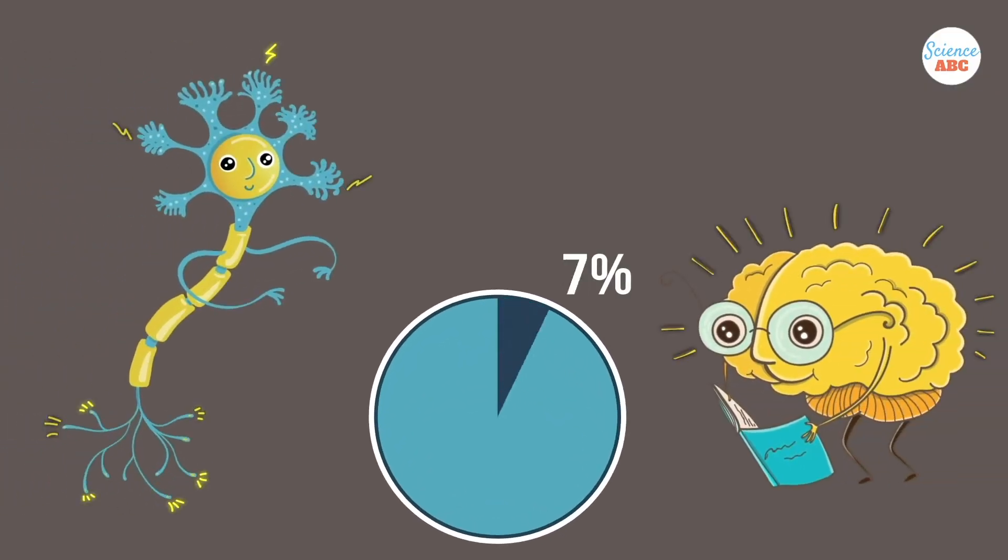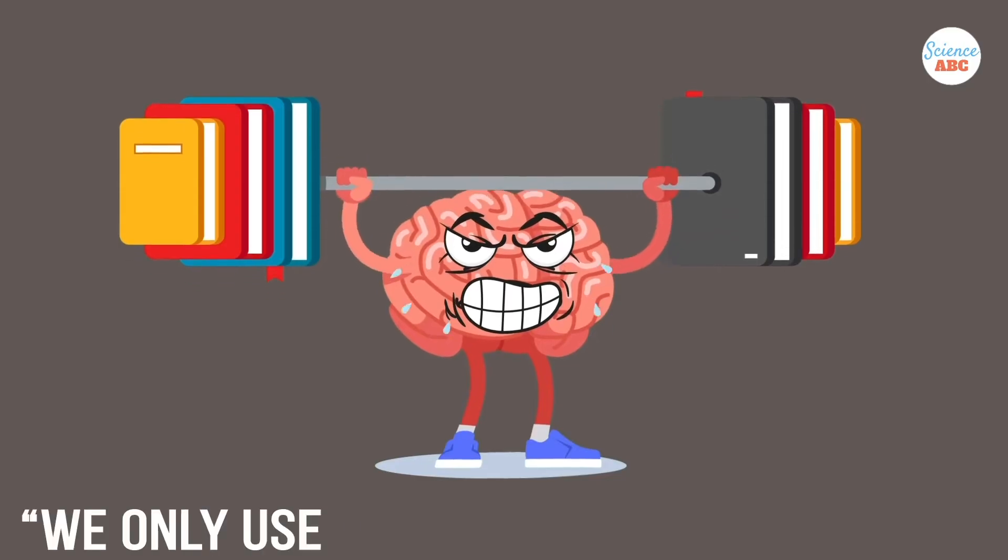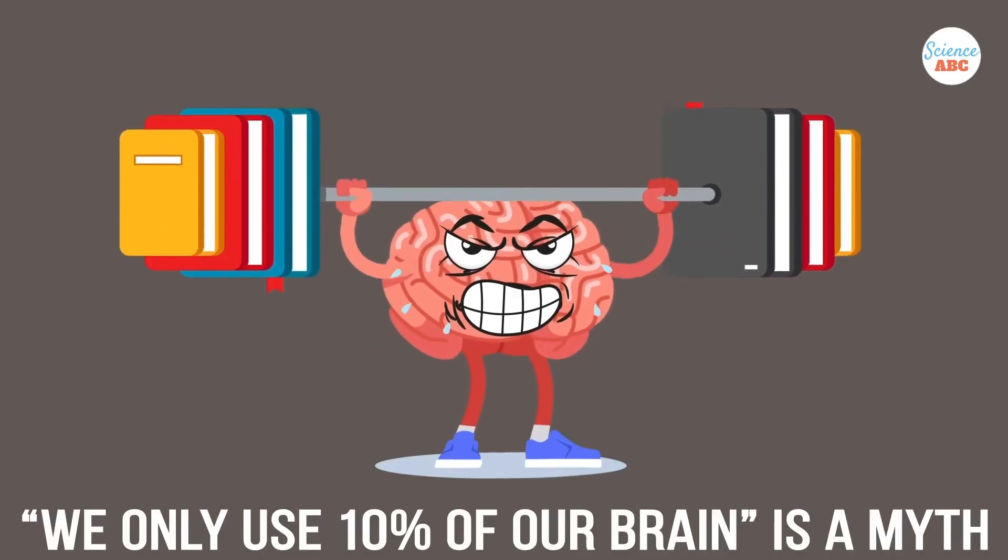The neurons only make up about 10-15% of the brain. The remaining 85-90% is composed of the glial cells. This might be where the 'we only use 10% of our brain' myth came from.